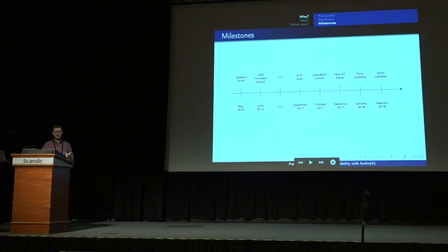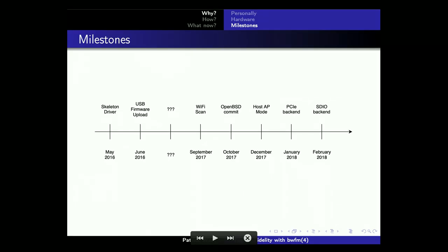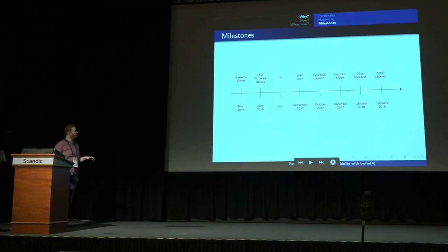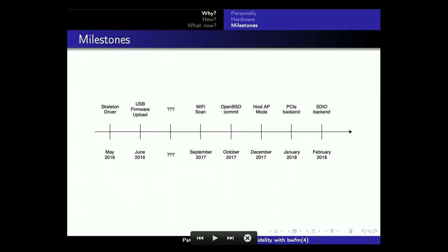If you look at the milestones, I started sometime in 2016 and it took quite a while. I don't know exactly what happened until September 2017. But at some point in 2017, I got the Wi-Fi scan running — there was a lot of work involved in my spare time. After I got the first Wi-Fi scan where I could see all the nodes around me in ifconfig, it was basically enough to get it committed and cleaned up. In the following months I implemented host AP mode and added a PCI Express and SDIO backend.